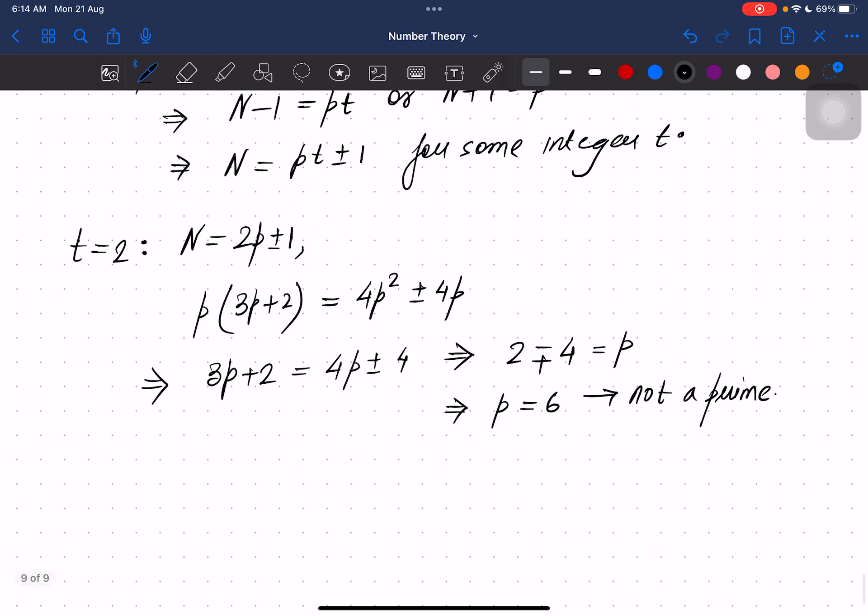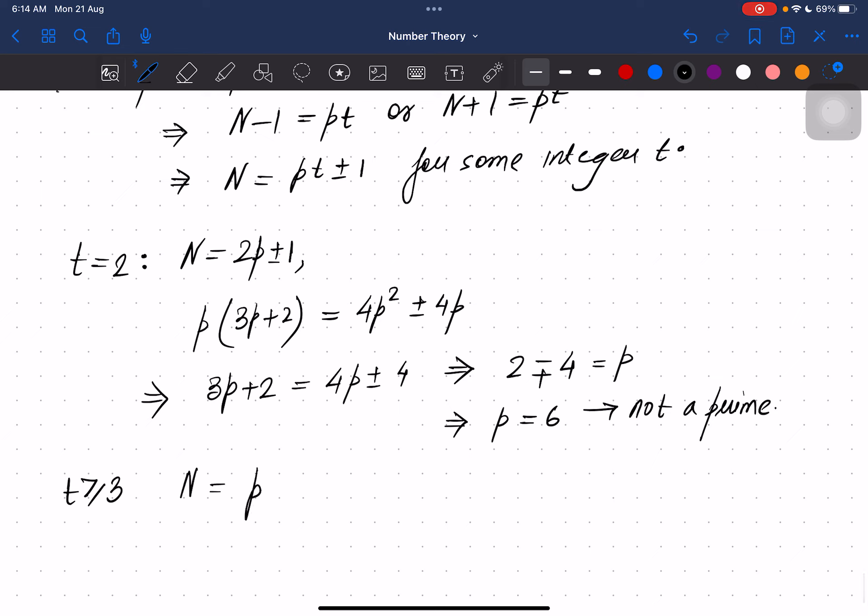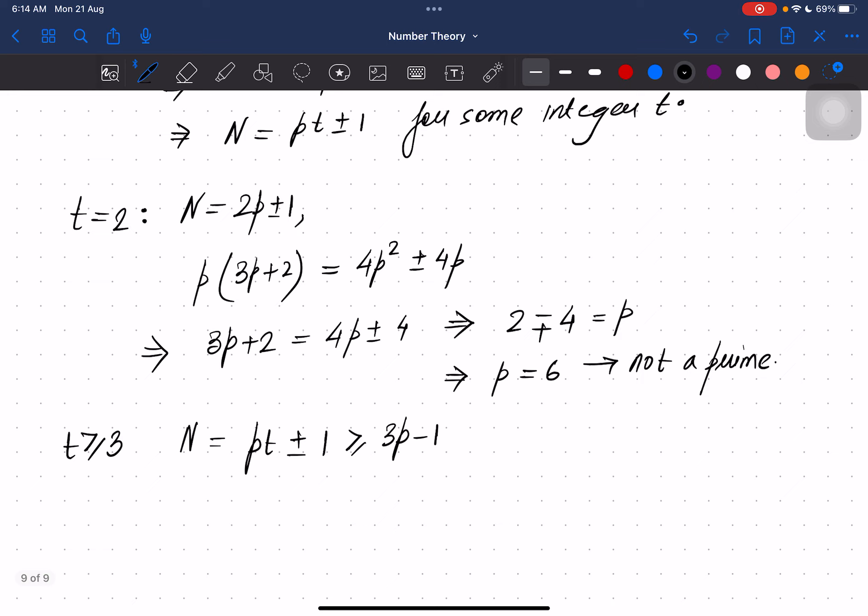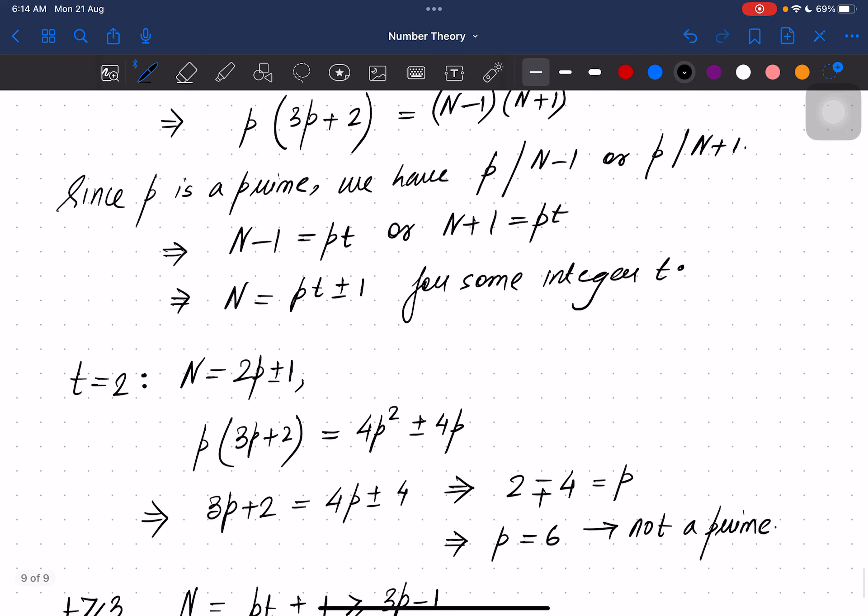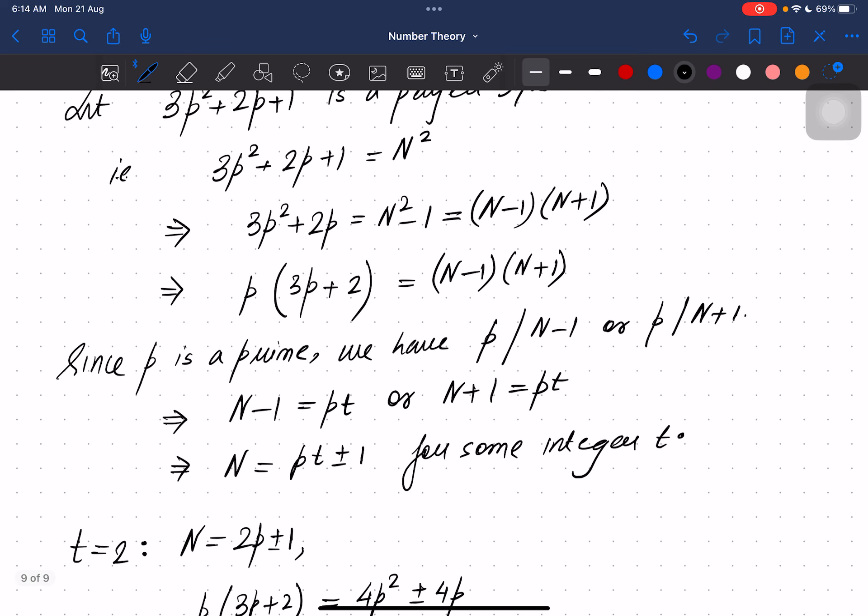Now let us take t is strictly greater than 2 or greater than or equal to 3. Then this quantity N = pt ± 1 is greater than or equal to 3p - 1 because t is greater than or equal to 3. Now squaring both sides I have (3p-1)² ≤ 3p² + 2p + 1, which is our N².